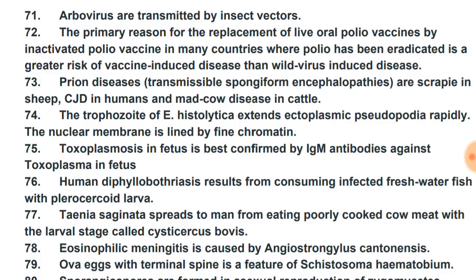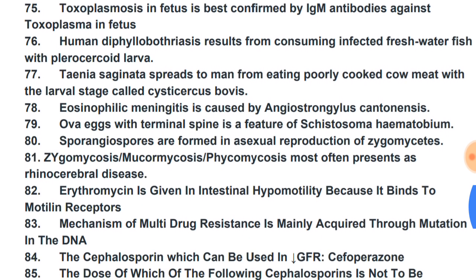The trophozoite of Entamoeba histolytica extends ectoplasmic pseudopodia rapidly; the nuclear membrane is lined by fine chromatin. Toxoplasmosis in a fetus is best confirmed by IgM antibodies against Toxoplasma in the fetus.